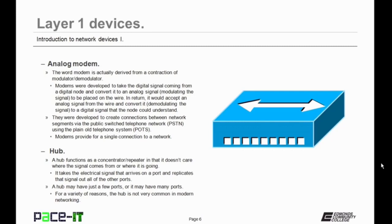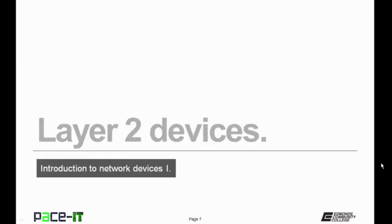Then there's the hub. A hub functions as a concentrator or repeater in that it doesn't care where the signal comes from or where the signal is going. It takes an electrical signal that arrives on a port and replicates that signal out all of its other ports. A hub may have just a few ports or many ports, and for a variety of reasons, the hub is not very common anymore in the modern network. Now let's move on to Layer 2 devices.